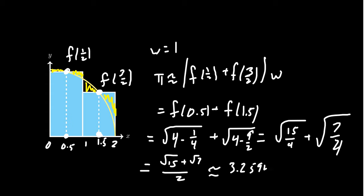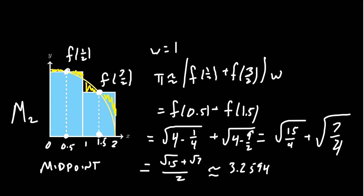Our estimate for π is getting better — 3.2 is better than the 2.7 we had before. How we decide on the height of the rectangle determines how good an estimate we have. The midpoint rule is actually pretty good. But this is what we get with only two rectangles — we're literally trying to fit a square peg into a round hole.